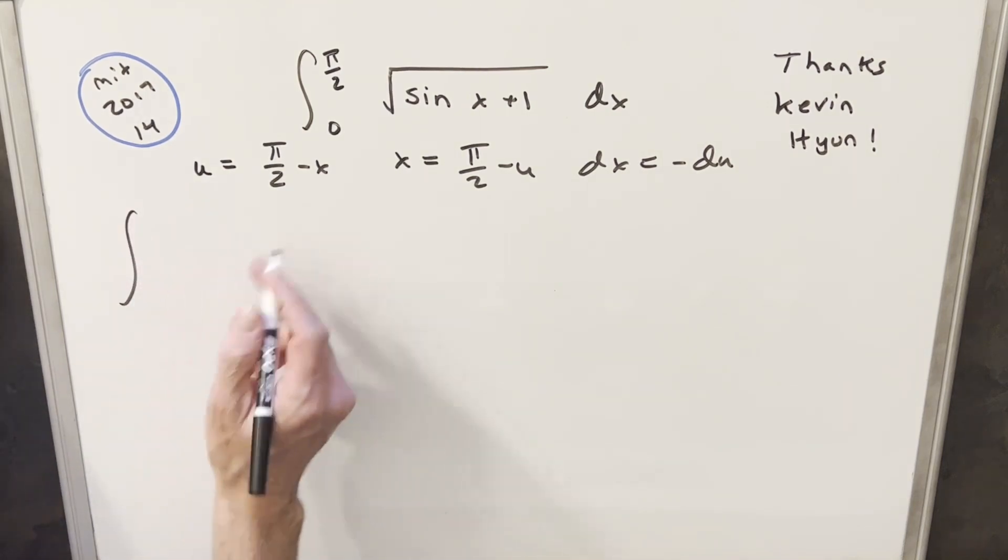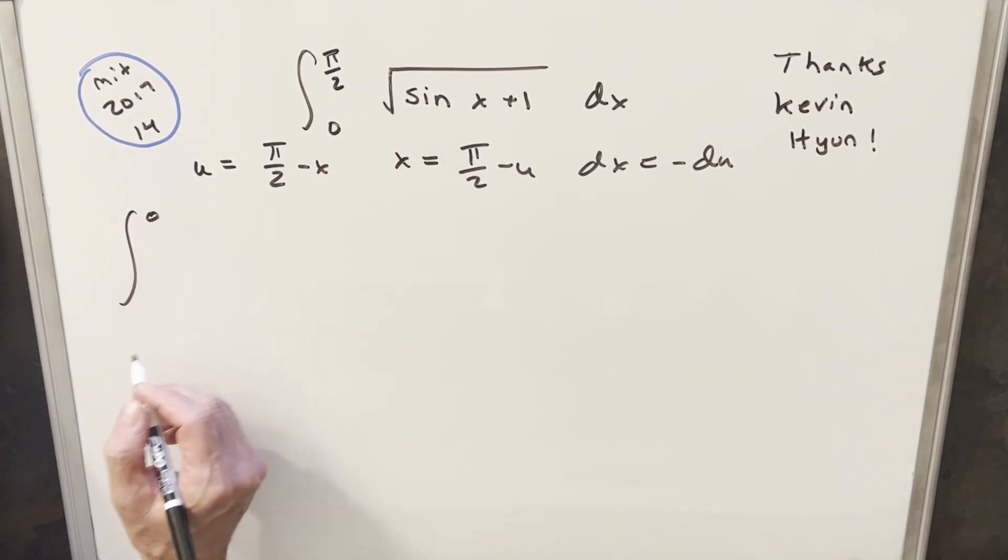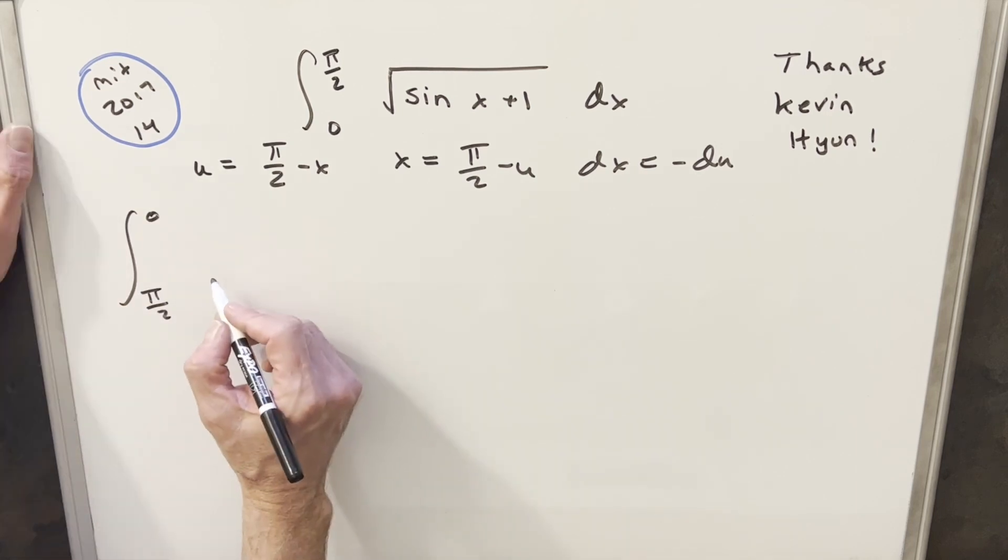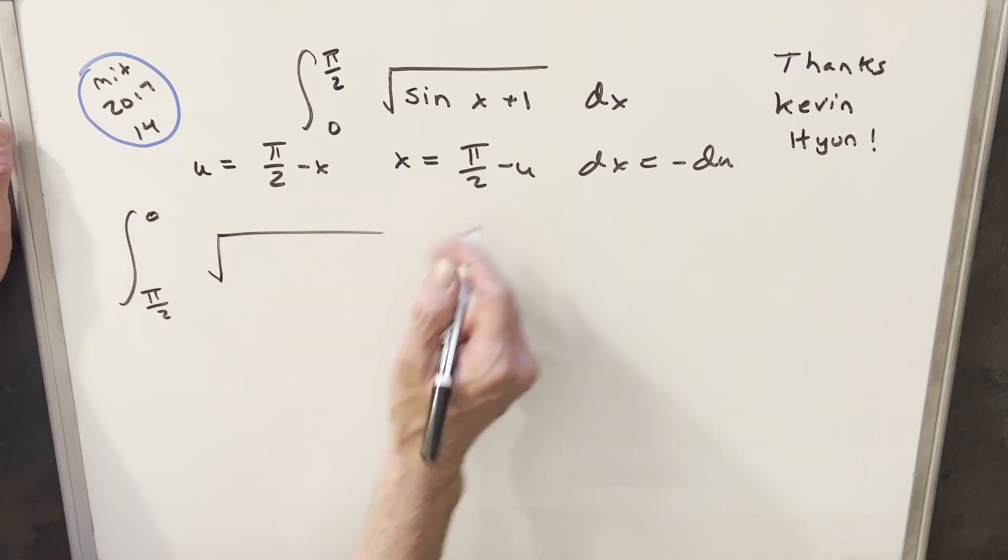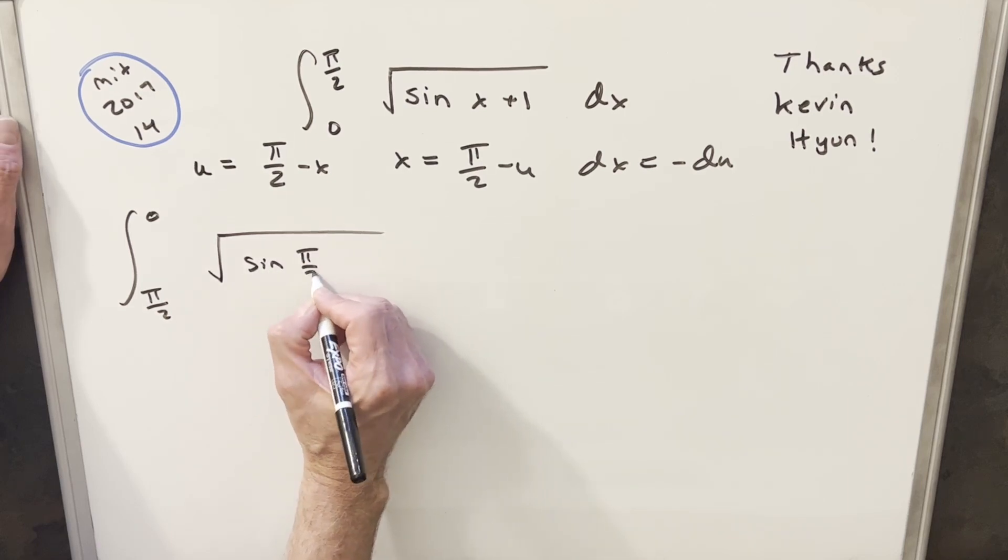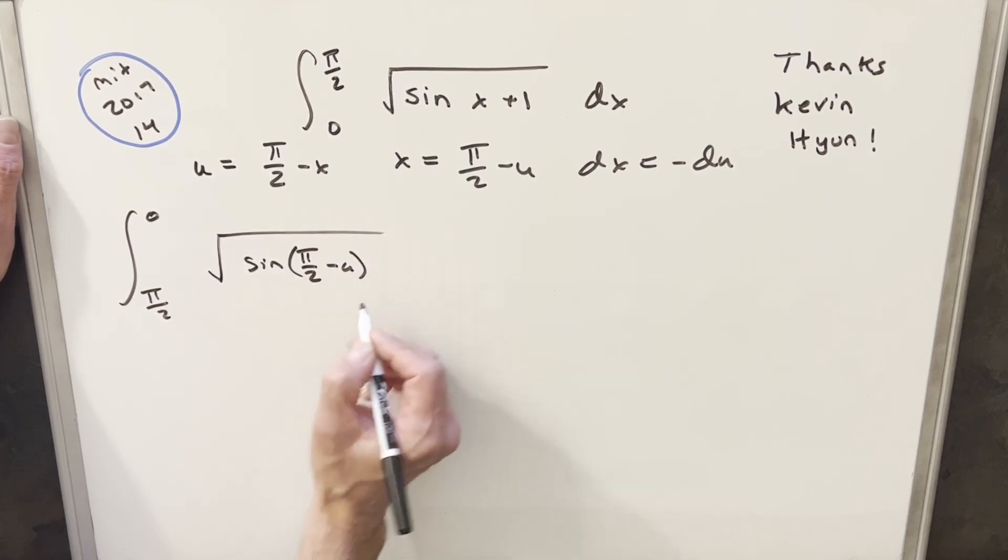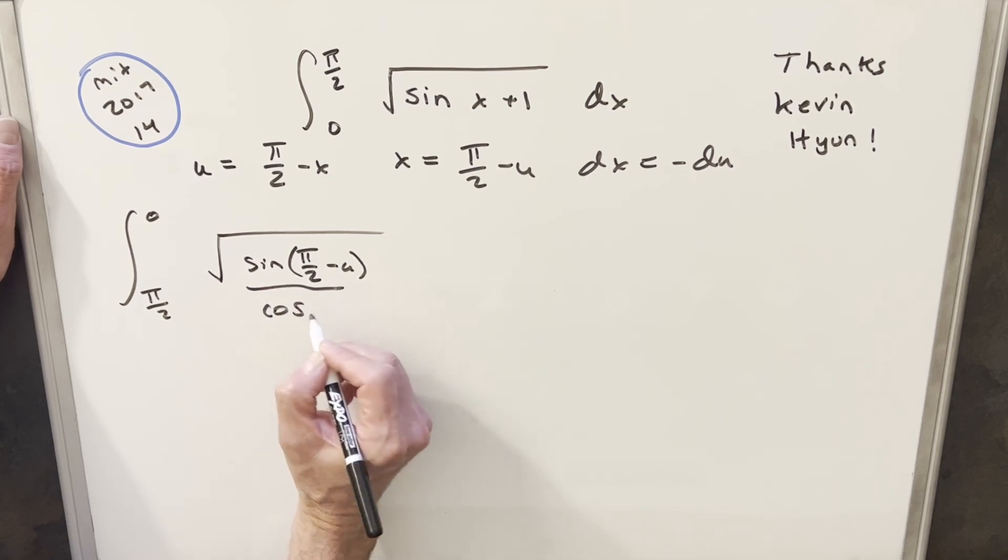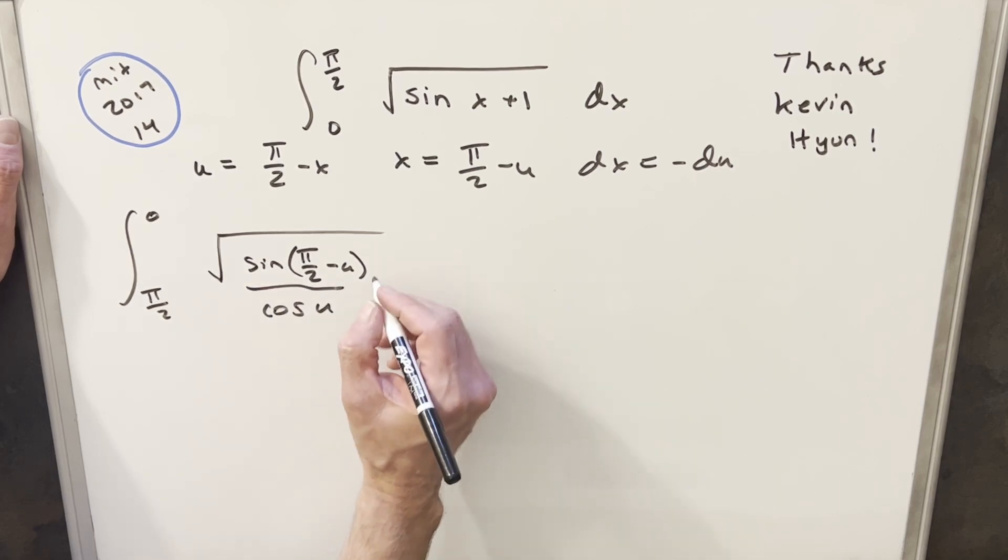We'll just go ahead and substitute. So plugging in pi over 2, we get 0. And if I plug a 0 in here, I have pi over 2. Now for the sine x value, when I plug this in, this is actually going to be the complementary angle formula. So sine of pi over 2 minus u,